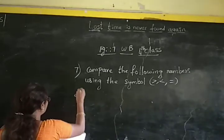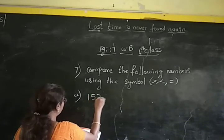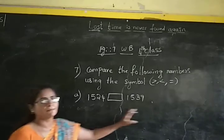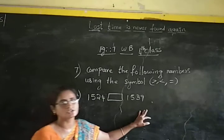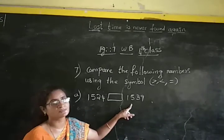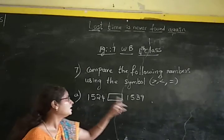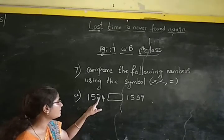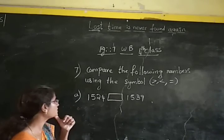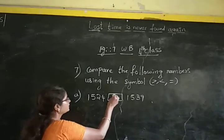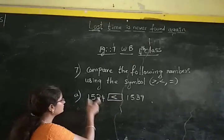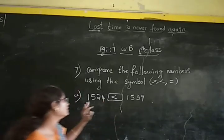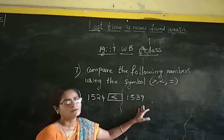Let us do the 1st sum: 1,524 and 1,539. We have to compare these 2 numbers. Both are 4-digit numbers. In thousands place and hundreds place, both numbers have the same digits — 1 and 5 respectively. In tens place, this number has 2 and this number has 3. Since 2 is smaller, we use the lesser than symbol. This shows that 1,524 is smaller than 1,539.